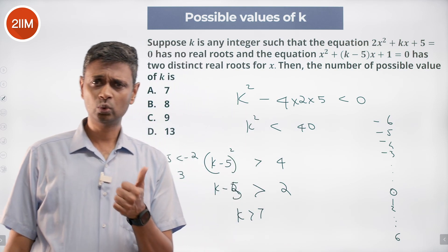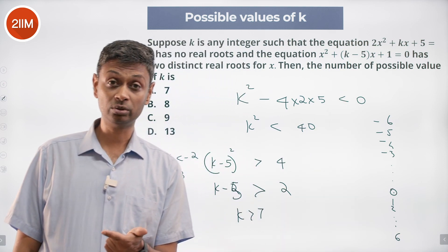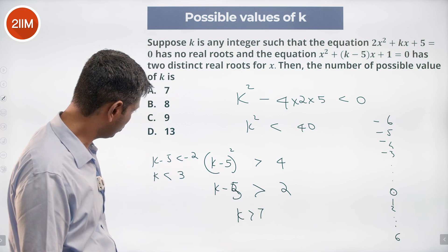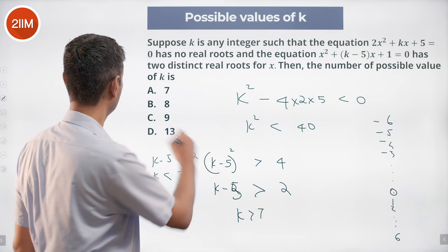Talking about 2, 1, 0, and then -1 to -6. -6 to -1 is 6 values, 0, 1, 2 all of them work. We put k = 0: (0 - 5)² = 25, yeah it works. So 9 values here, we are done.